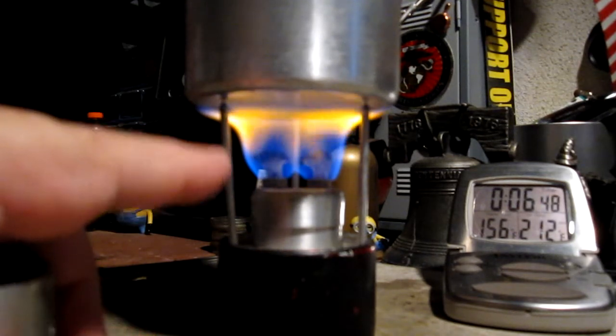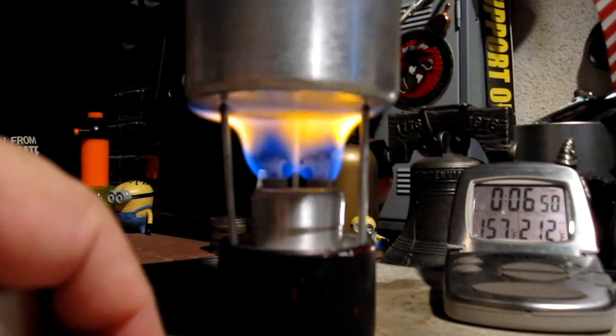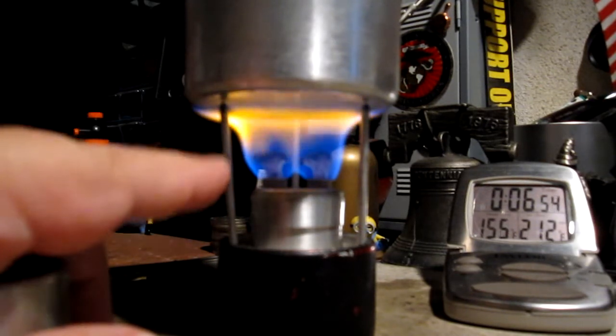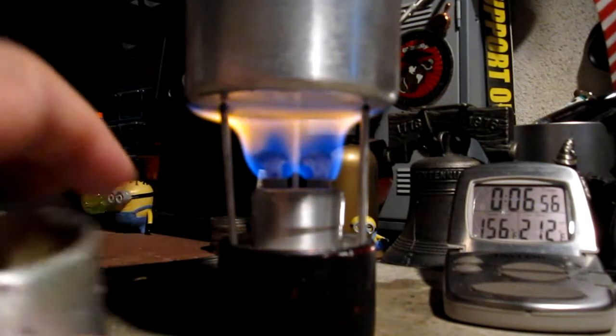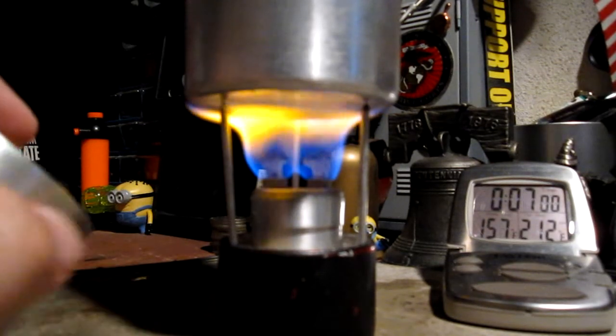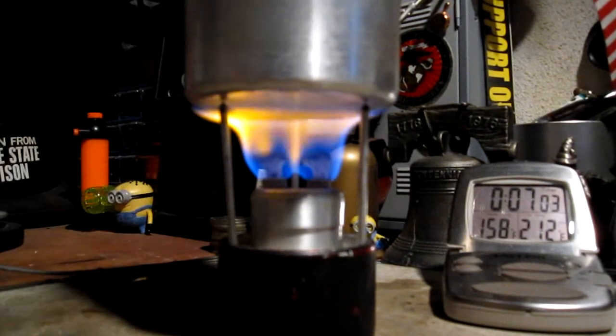Again, I'm not sure why it's all yellow. There is about an inch between the top of the wick to the bottom of the pot. Maybe the wicks could have been brought down a little bit. We'll see how long it takes yet to get to boiling.